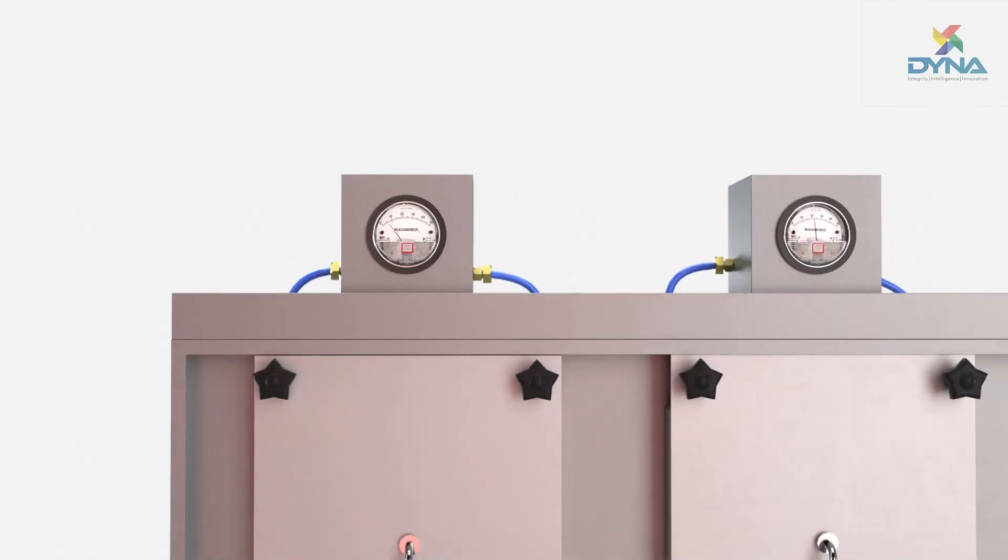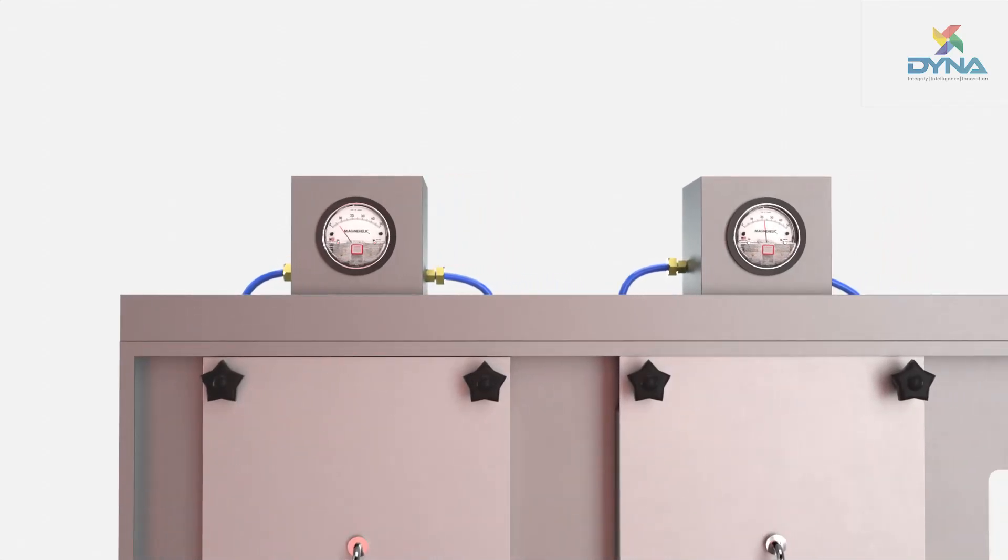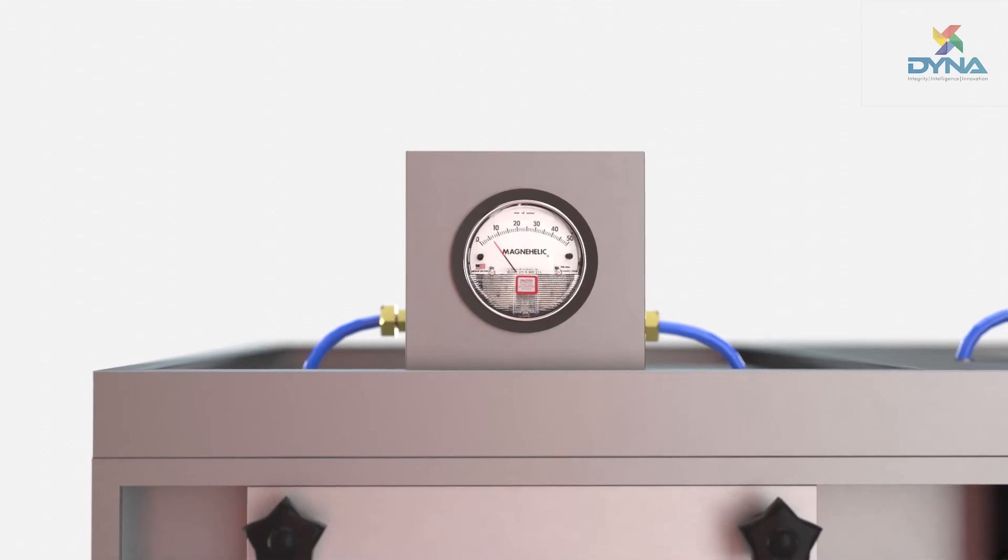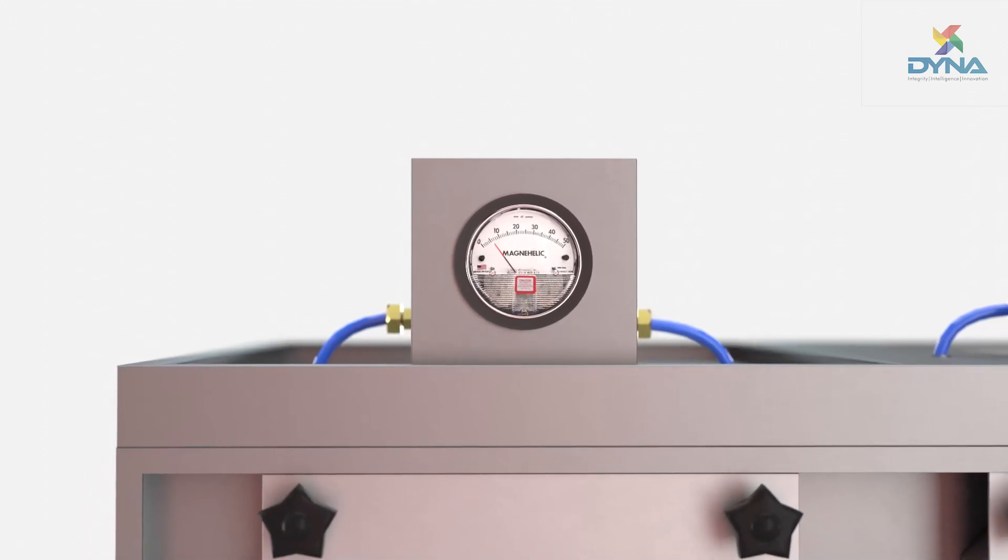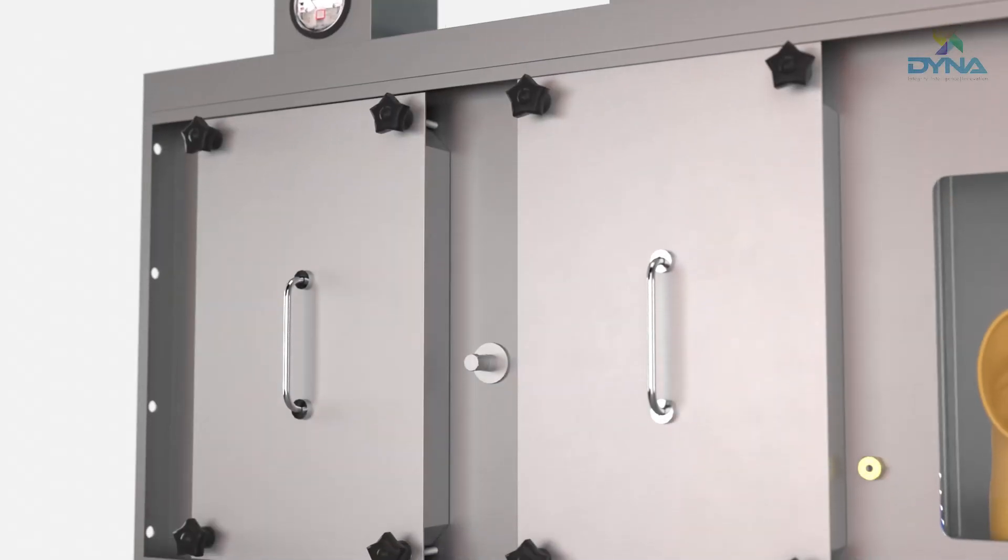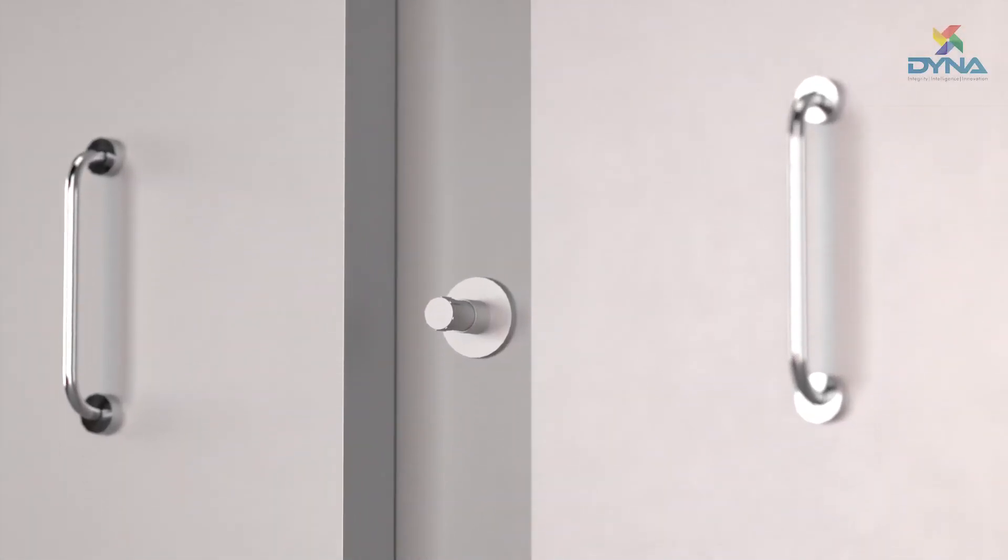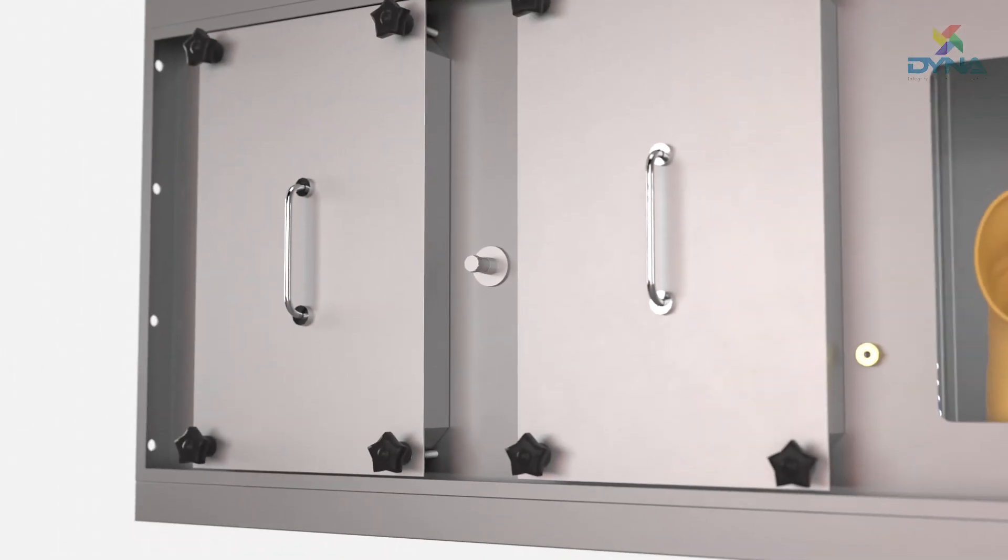Pressure gauges are installed on the BIBU system that monitor the pressure differential to indicate the changeover. An aerosol injection port is provided before the HEPA filter to count the upstream concentration.